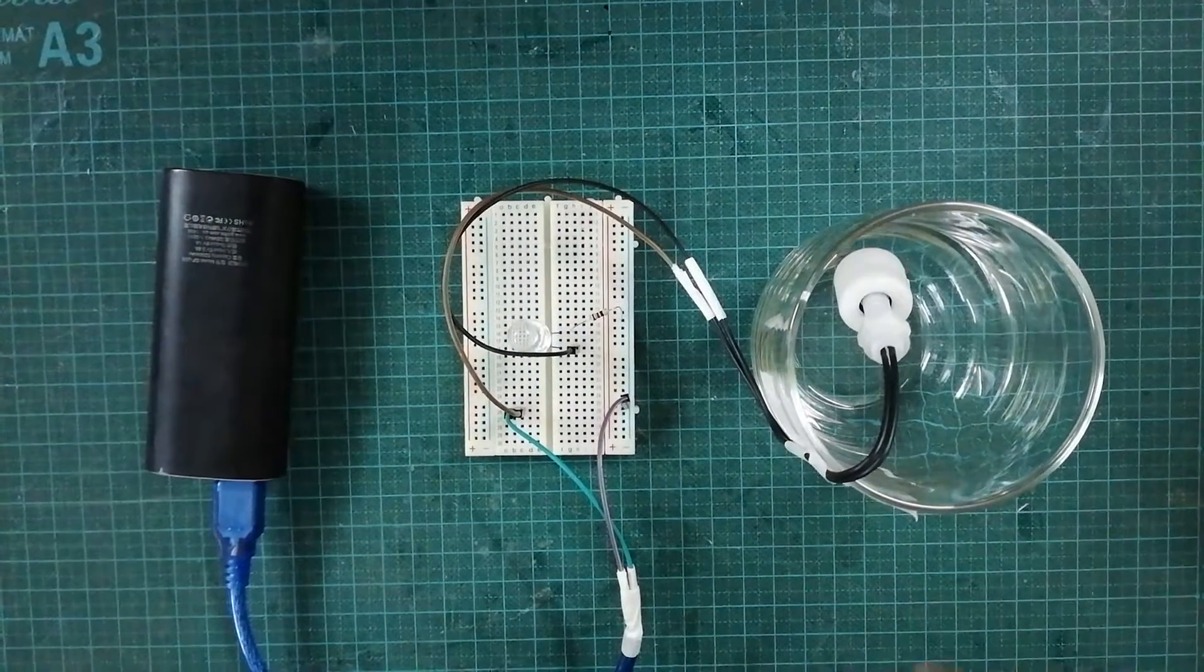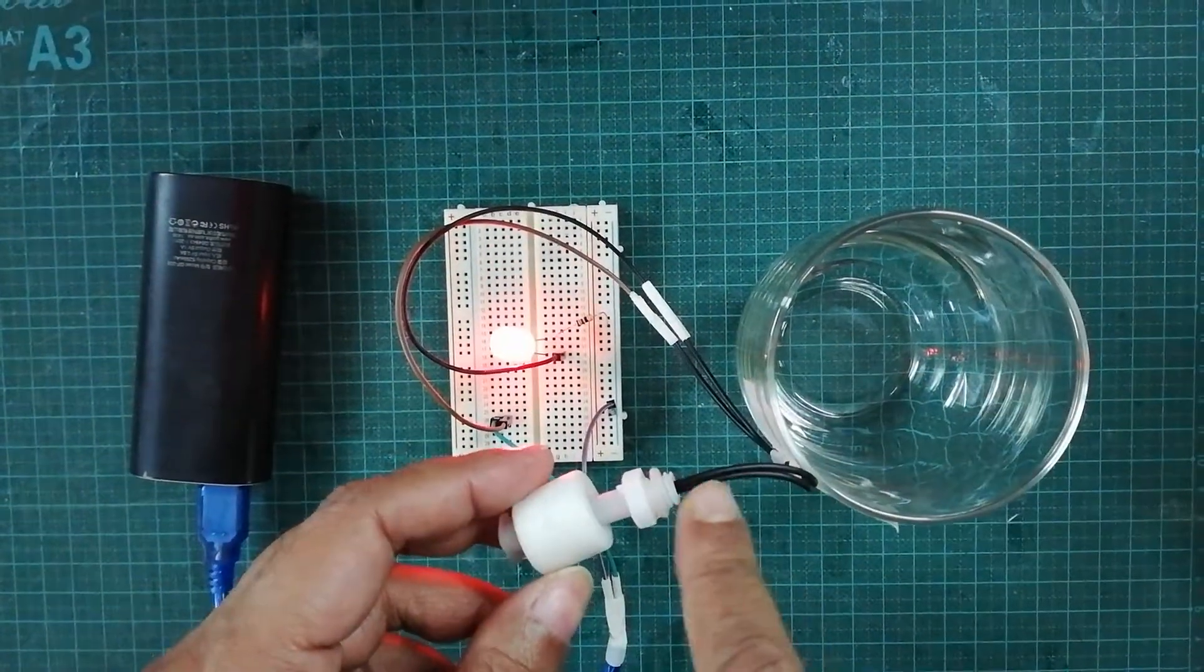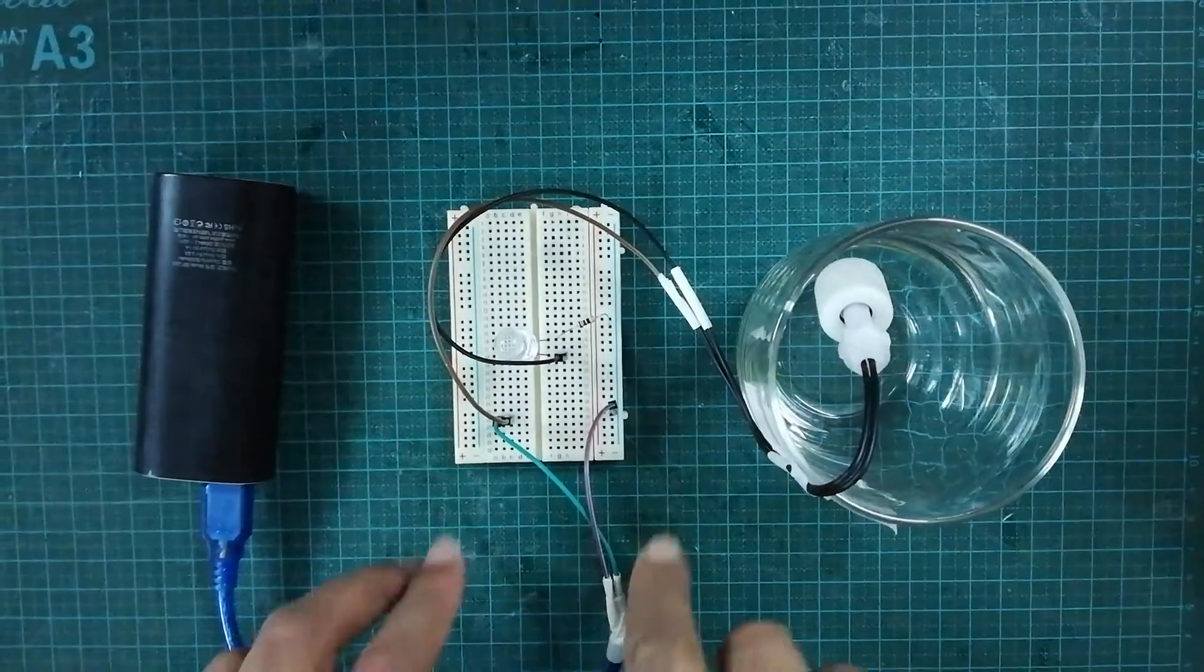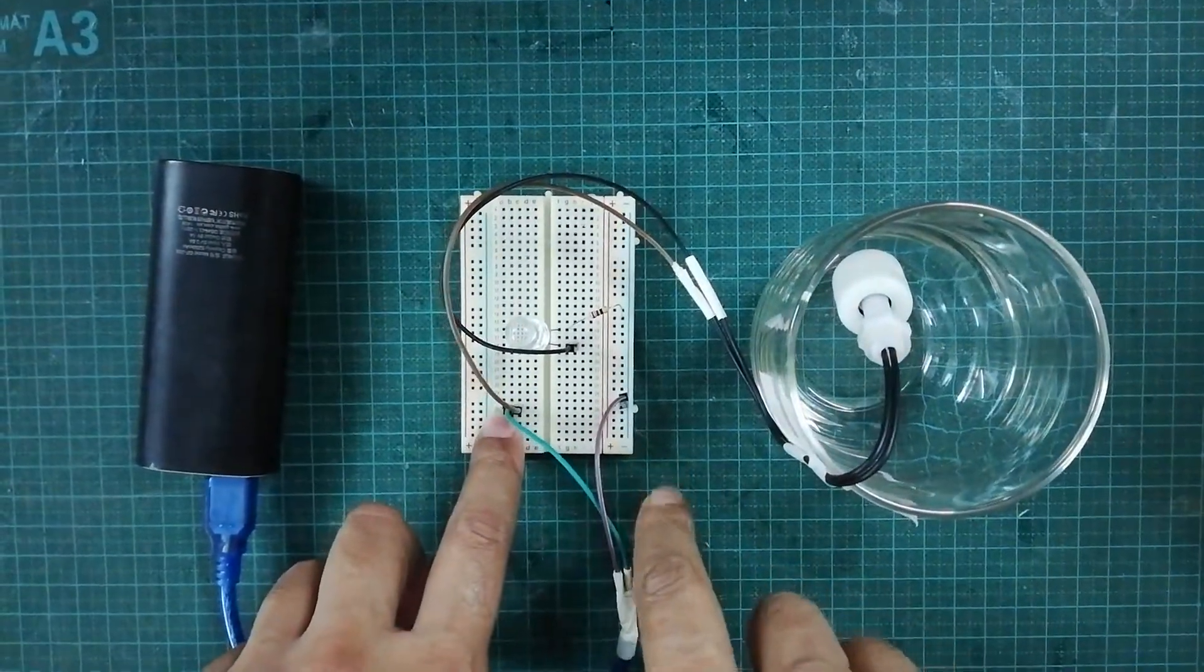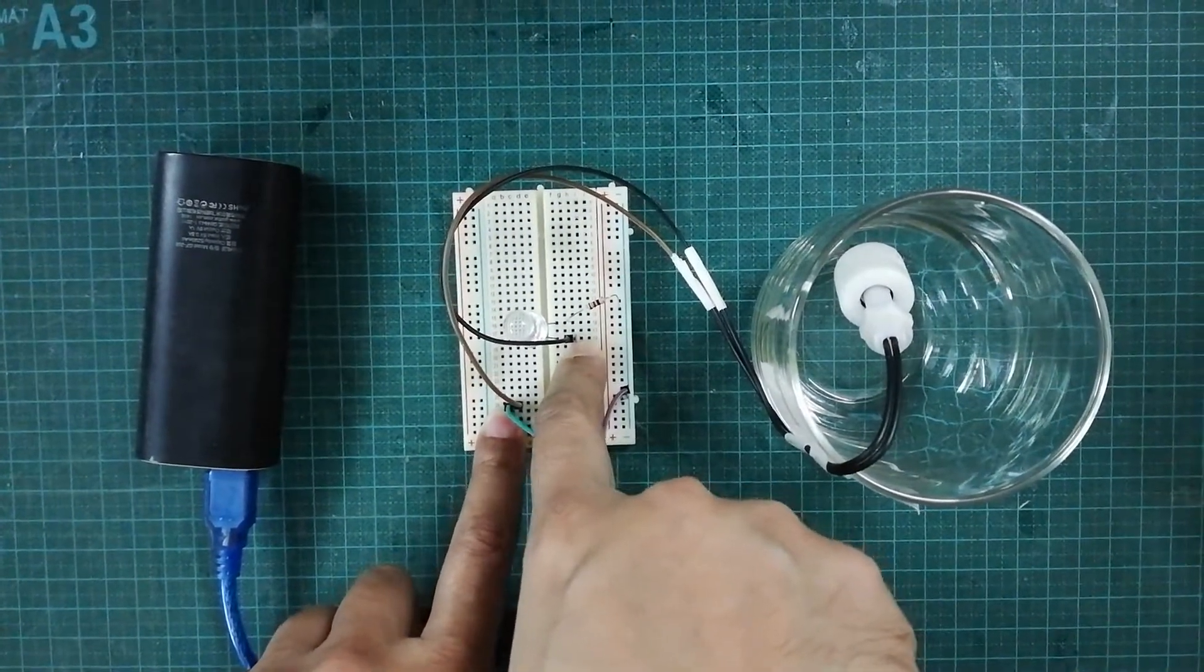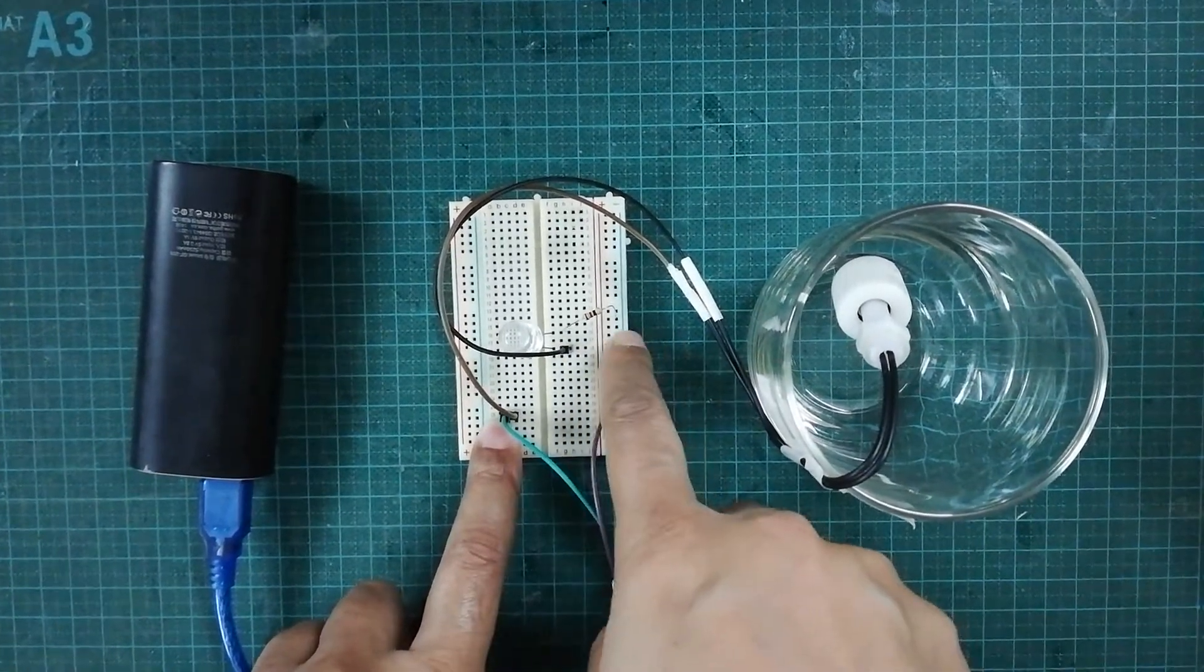This water level indicator has two wires. I'm connecting one wire here with one point of the LED, and the other point of the LED goes through the resistor to ground.